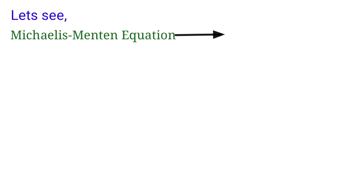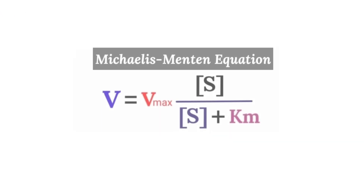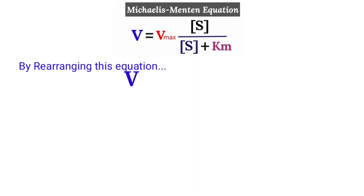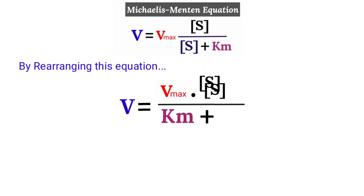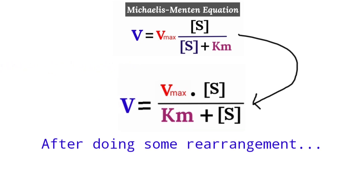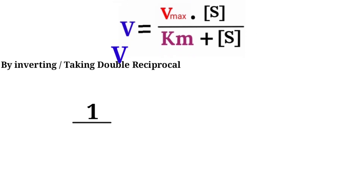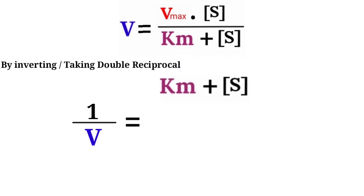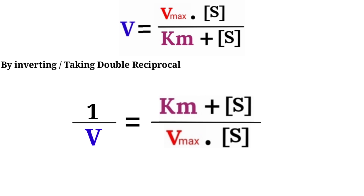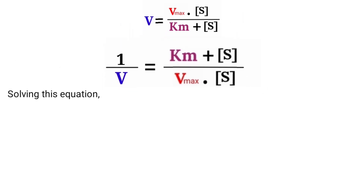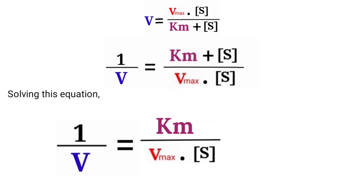Let's see how they transformed the Michaelis-Menten equation into the Lineweaver-Burk equation. The Michaelis-Menten equation is: v = Vmax × [S] / (Km + [S]). By inverting this equation you get: 1/v = (Km + [S]) / (Vmax × [S]). After expanding, this becomes: 1/v = Km / (Vmax × [S]) plus [S] / (Vmax × [S]).